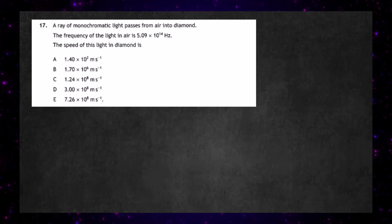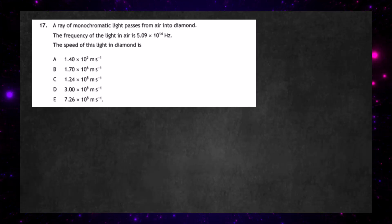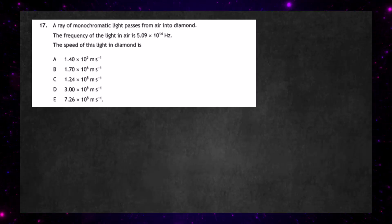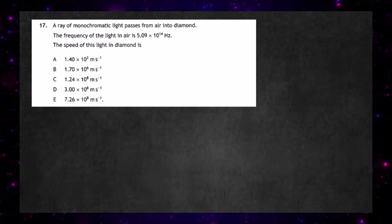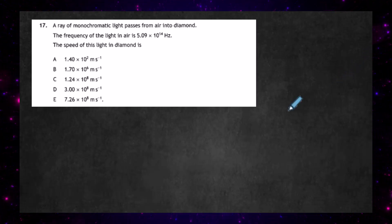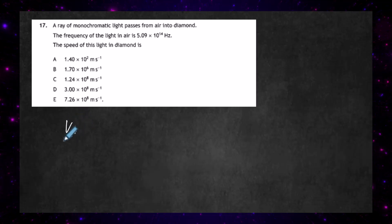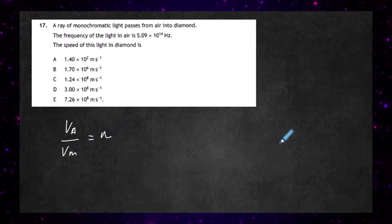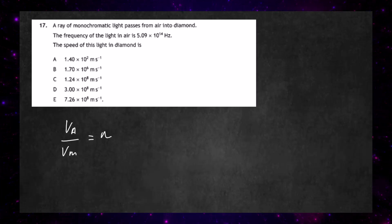Question 17 from the 2024 Higher Physics examination from the SQA. A ray of monochromatic light passes from air into diamond. The frequency of the light in the air is 5.09 × 10¹⁴ Hz and we're asked to find the speed of this light in the diamond. We know that the speed of light in air divided by the speed of light in the medium is always equal to the refractive index, so all we need to do is find the refractive index.